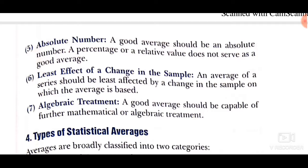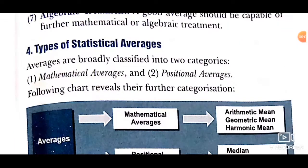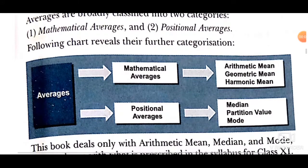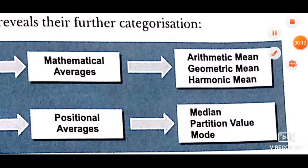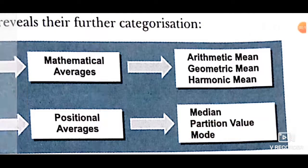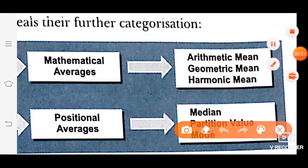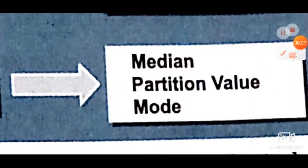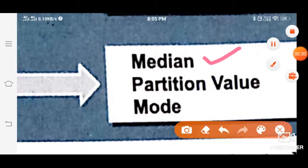Seventh: algebraic treatment. A good average should be capable of further mathematical or algebraic treatment, so that the data can be used for other analyses. Now, types of statistical averages: first is mathematical average, and second is positional average. Under mathematical average, we have arithmetic mean, geometric mean, and harmonic mean. Under positional average, we have median and mode.